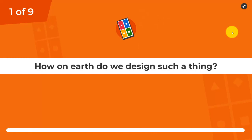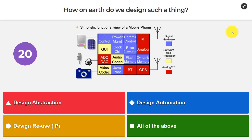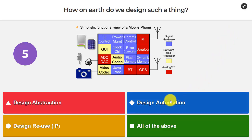How on earth do we design such a thing? What we see here is a simplistic view of a mobile phone. We have IO control, GUI, ADCs and DACs, GPS, RF, communication control, power management — all these types of things. Do we use design abstraction, design automation, design reuse, or maybe it's all of the above?